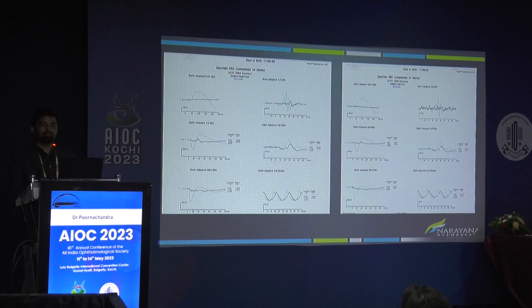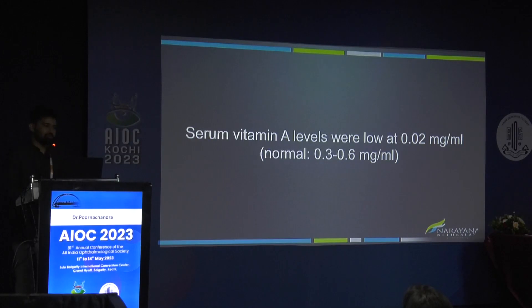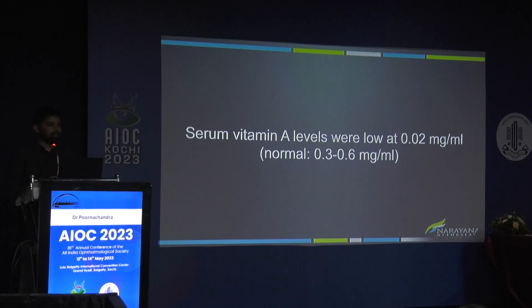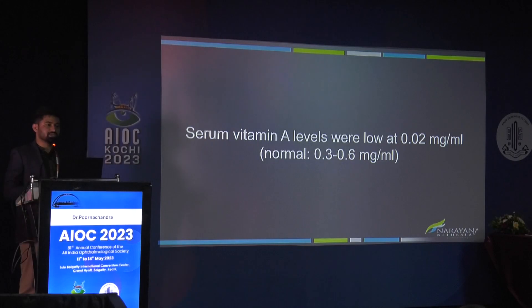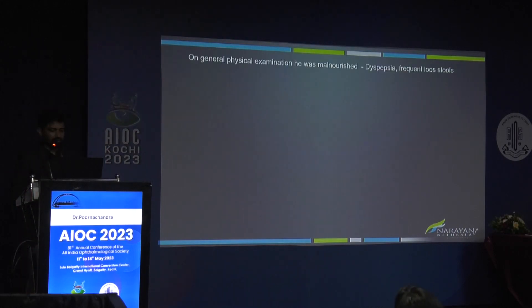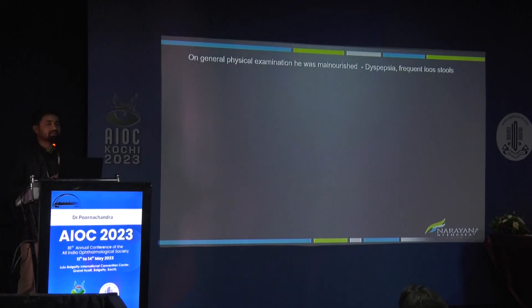So, a 26-year-old male with a night vision problem where everything looks normal — the first thing to suspect is vitamin A deficiency. I ordered vitamin A levels and, as expected, they came back very low. But our job doesn't stop there — why should a 26-year-old male have vitamin A deficiency? We need to find the cause. On general physical examination, the patient appeared malnourished.